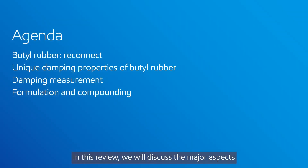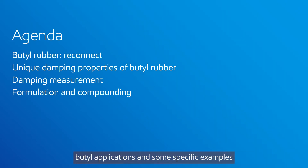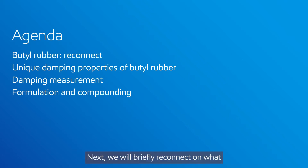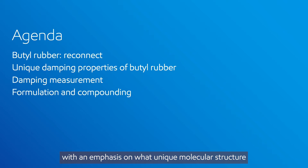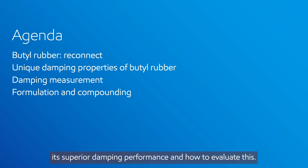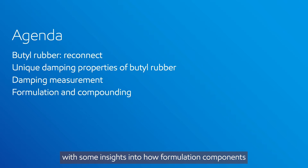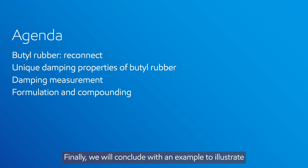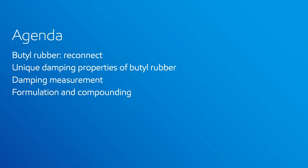In this review, we will discuss the major aspects of the damping properties of Butyl Rubber. First, we will look at the most common Butyl applications, then some specific examples where damping properties play a role in product selection. Next, we will briefly reconnect on what differentiates Butyl Rubber from other elastomers, with an emphasis on what unique molecular structure and properties provide Butyl Rubber its superior damping performance, and how to evaluate this. Then a generic Butyl Rubber formulation will be shared with some insights into how formulation components influence the damping performance of a cured compound. Finally, we will conclude with an example to illustrate how the application temperature and frequency are key to developing a good damping compound. Ready to begin?